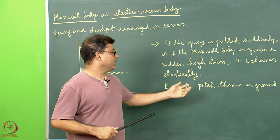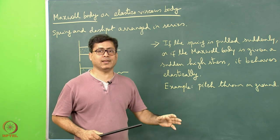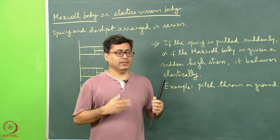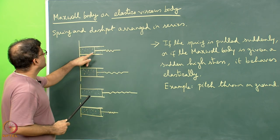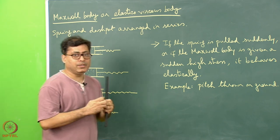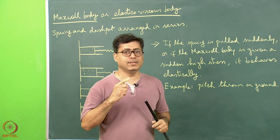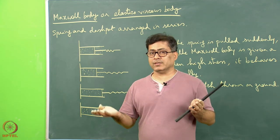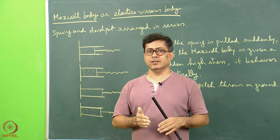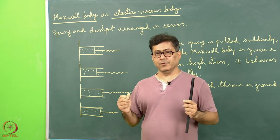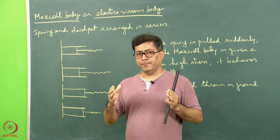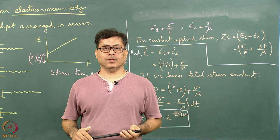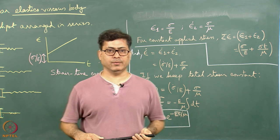Now think that the pitch is not thrown on the ground — no sudden stress is applied. Rather, the pitch is pulled slowly. Then what will happen? That would be comparable to the viscous component of deformation of the Maxwell body. The pitch will deform, and when the stress is removed, the pitch will not come back — the Maxwell body does not return to its initial configuration. So slowly pulled pitch will remain permanently deformed.